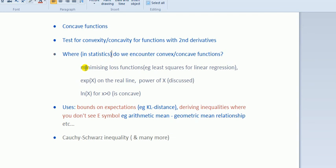So in statistics you're going to meet like loss functions, sometimes you have problems where you want to minimize some loss function, for example in regression you have this least squares for linear regression, that is convex. e to the power of x on the real line, that is convex. And you see that prevalent in all of statistics like in density functions.